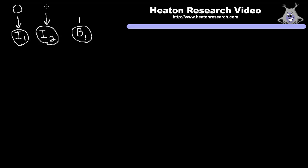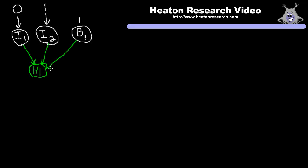We're going to try to use exclusive or. We're going to give the neural network an input of zero and one and we're going to see what the output would be calculated as. In the last section we saw that we were able to calculate the output from a configuration like this and it would go into an output neuron. In this case the output neuron is going to be the input for the first hidden neuron.